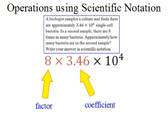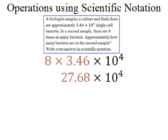For now, we're going to leave the power 10 to the 4th alone. So you'll be able to use your calculator to multiply 8 and 3.46, and you'll get a product of 27.68.